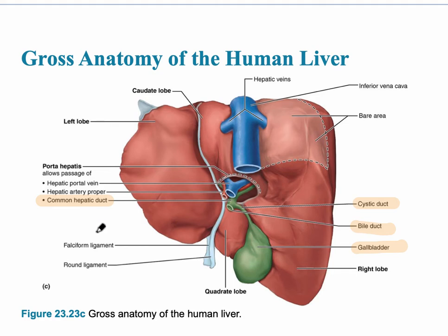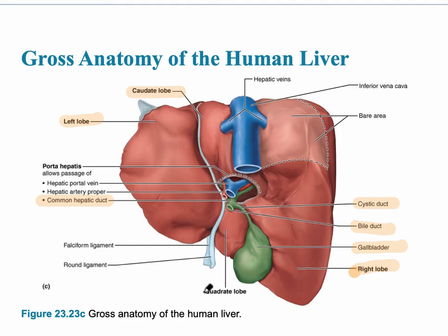On this slide you can see the various lobes of the liver. There are four main lobes: the right lobe, the left lobe, the caudate lobe, and the quadrate lobe.